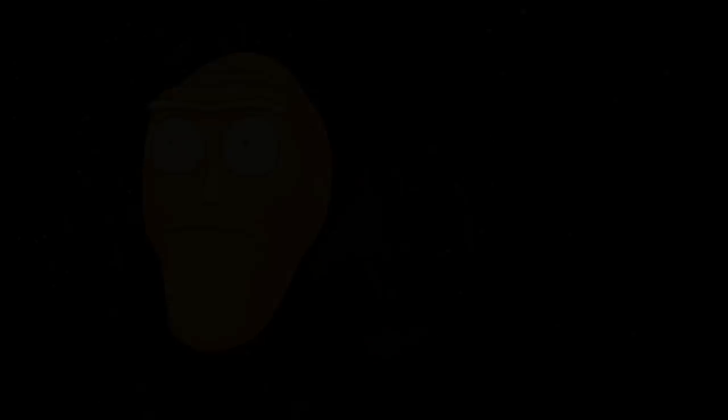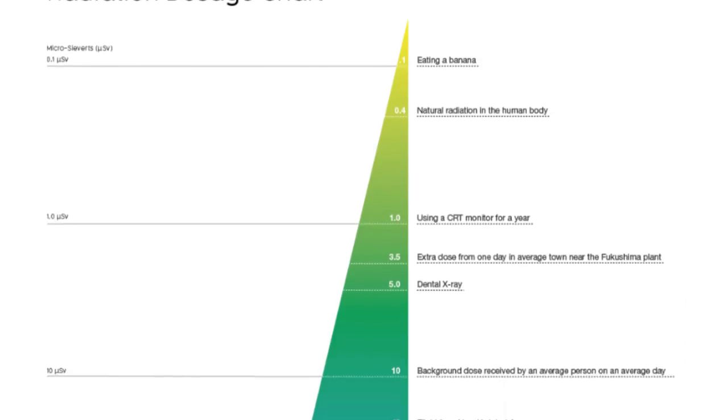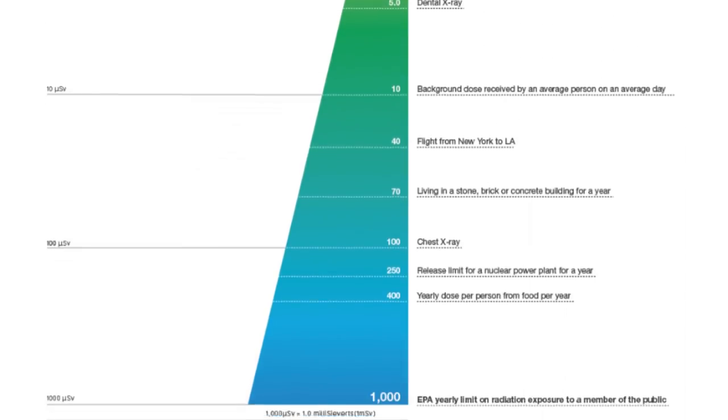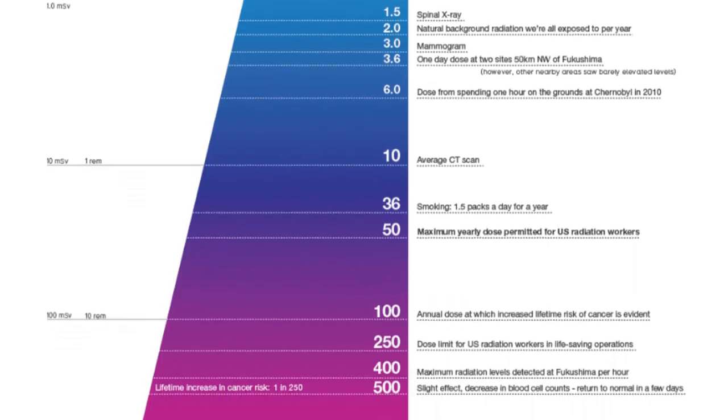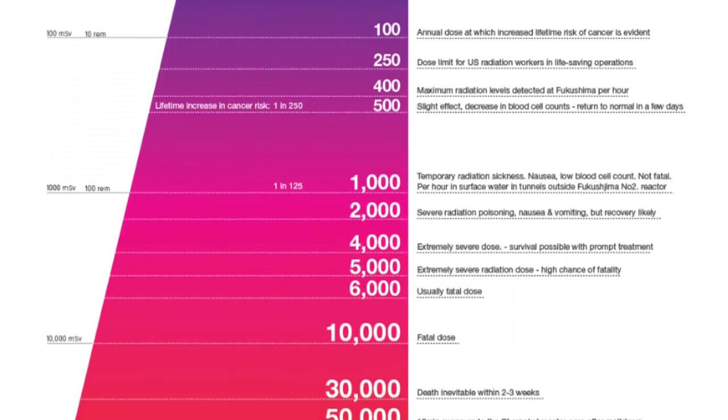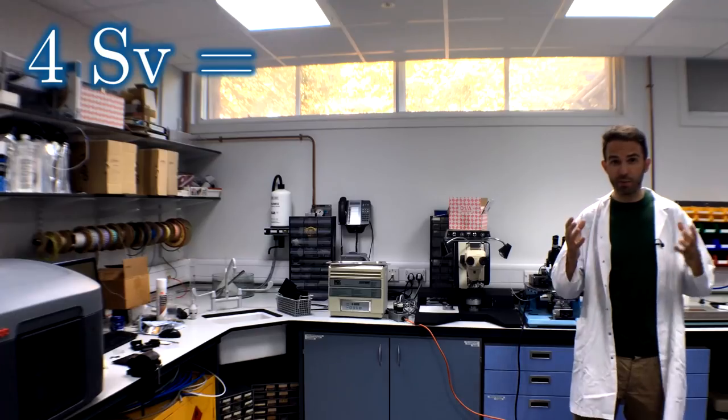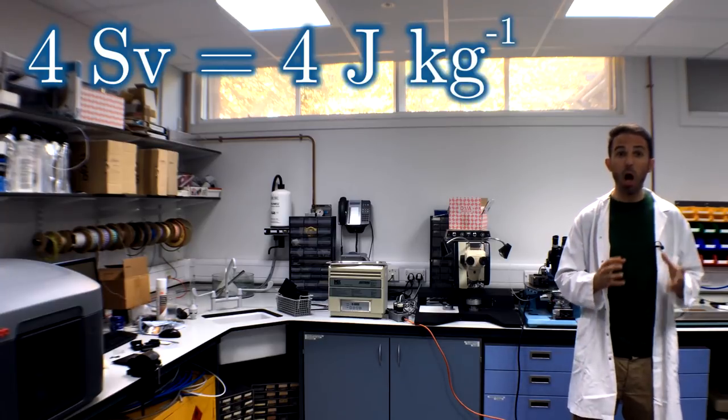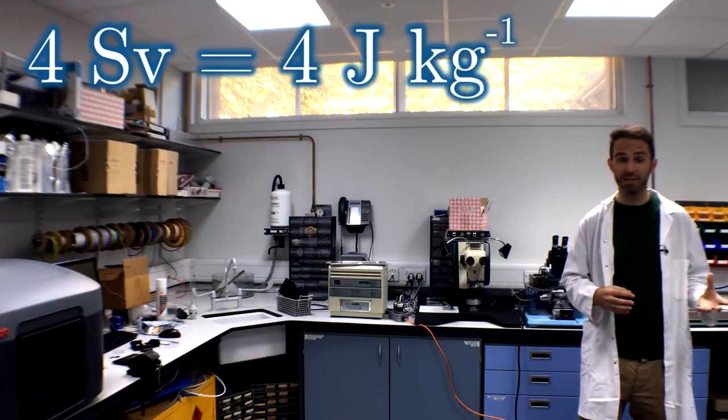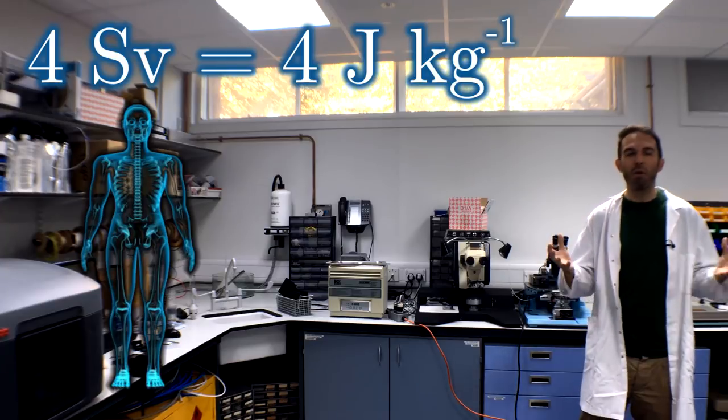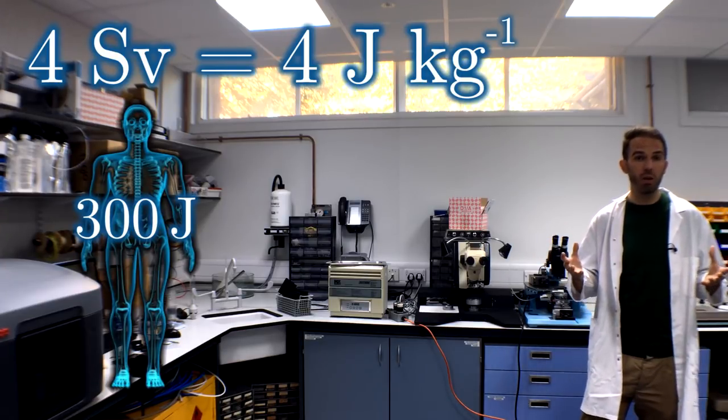And with electrons being so much lighter than any of the nucleons in atoms, it's going to gain most of the energy of that original neutrino. So how much energy for a schwifty death? Well, a fatal acute dose of radiation, the sort you get from a very intense burst, is at least four sieverts. That's four joules of energy being deposited per kilogram of mass, or equivalently about 300 joules in total for a human body.